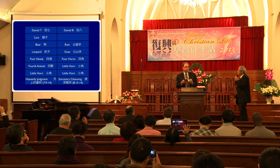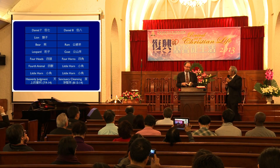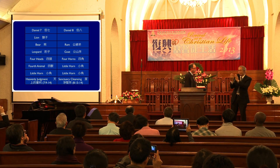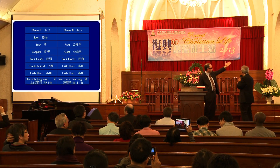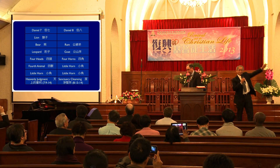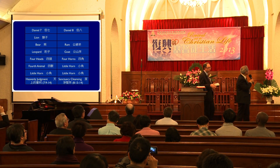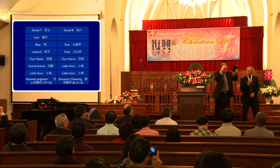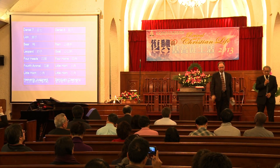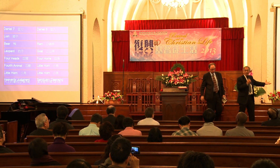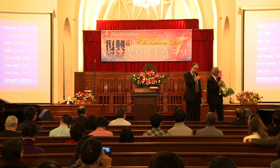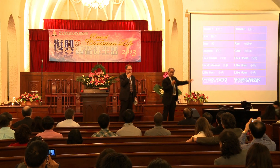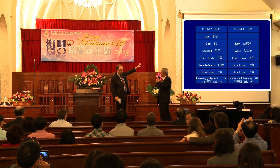In order to understand this, we need to put chapter 7 and chapter 8 side by side, as you have on the screen. As I said, these chapters are parallel, describing the same events basically. One recapitulates the other, and I hope these two columns on the screen will help you visualize this.